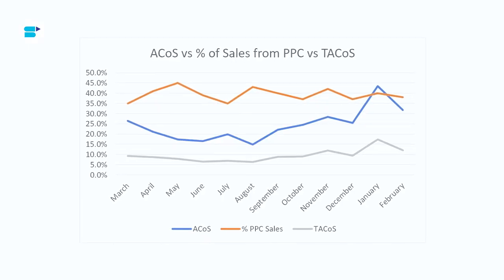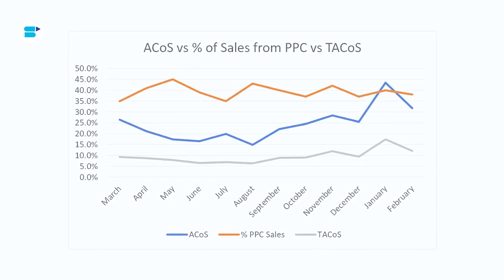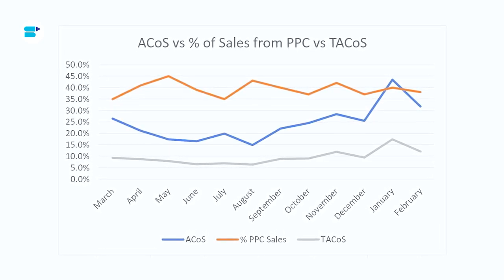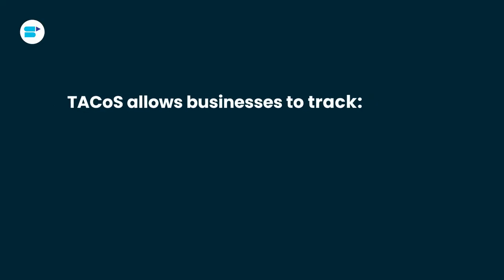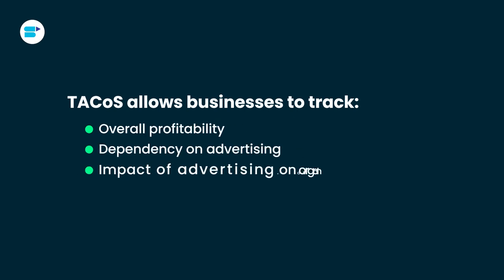ACOS is the amount spent specifically on advertising products for sale on Amazon. TACOS includes all advertising expenses, both on Amazon and other sites, as well as other marketing activities like sponsorships, promotional events, etc. TACOS allows businesses to track overall profitability, dependency on advertising, and the impact of advertising on organic sales.